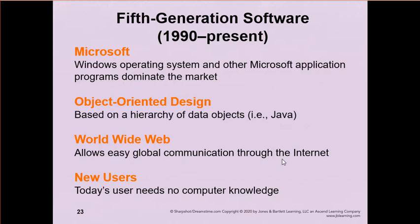And then fifth generation software are your modern operating systems — Windows, Mac, Linux. Object-oriented design is an approach to programming used not only in Java; C++, C Sharp, Python, and many other languages use objects. And then the World Wide Web brought huge communication capability. You don't need to know anything about how a computer works now to be able to use it, which is pretty cool. So that's the history of computing in a nutshell.